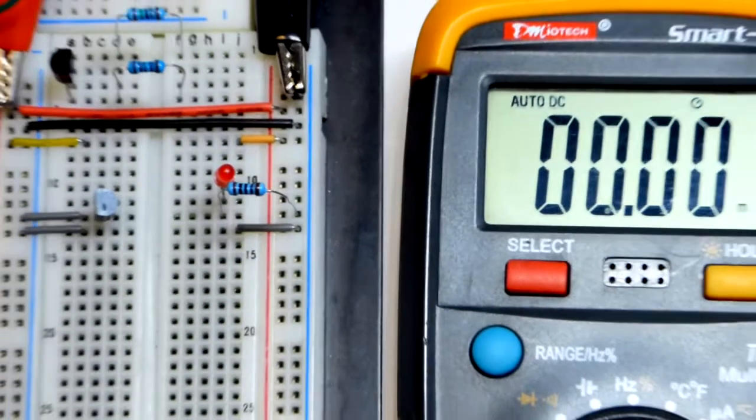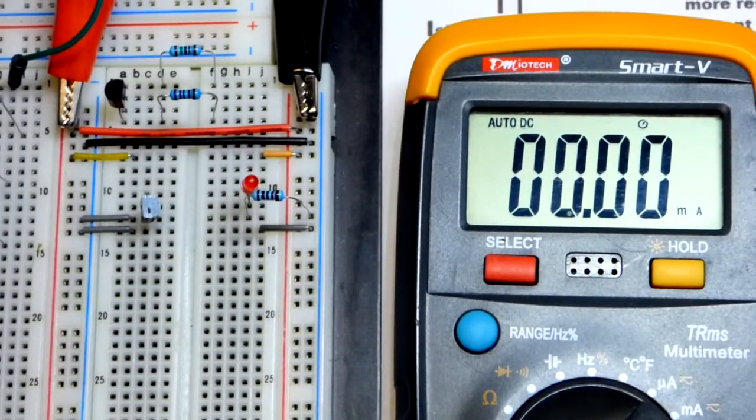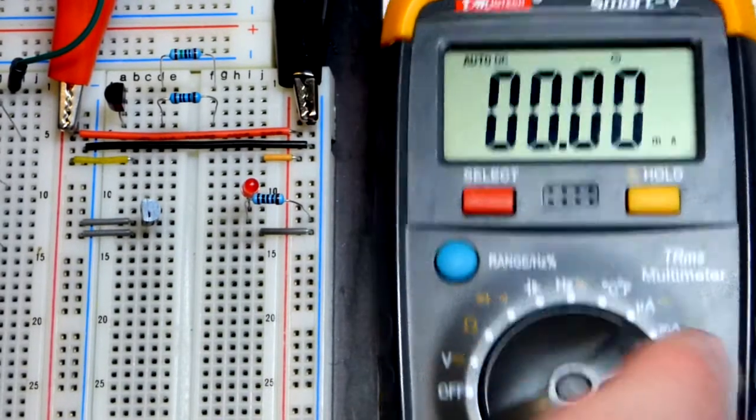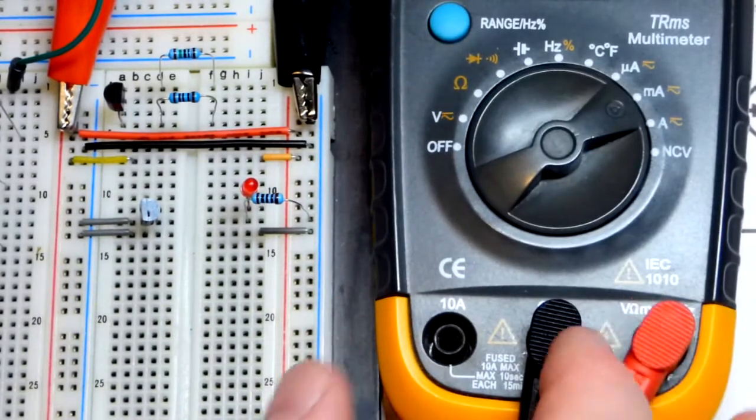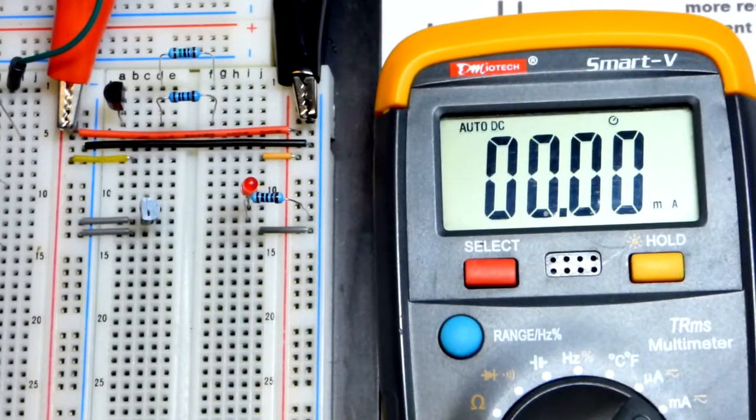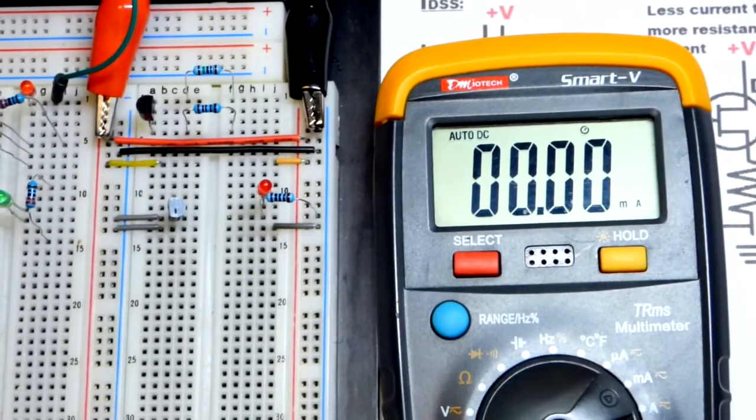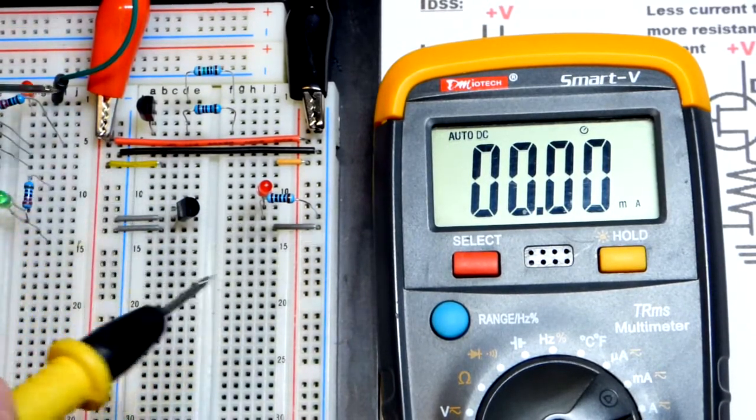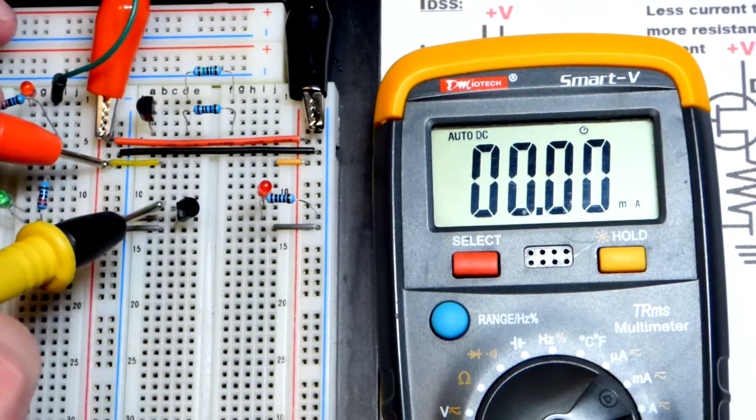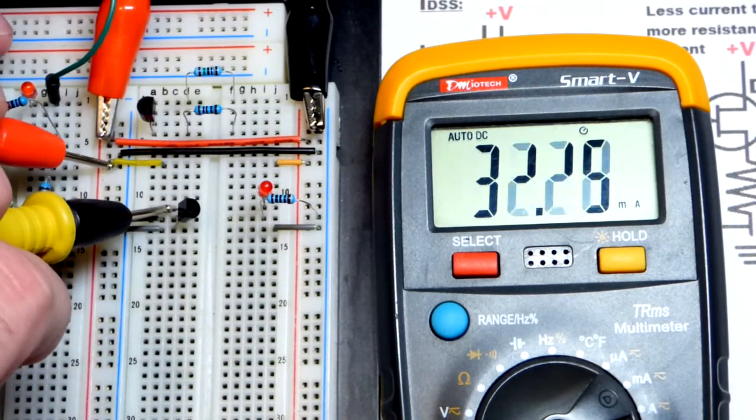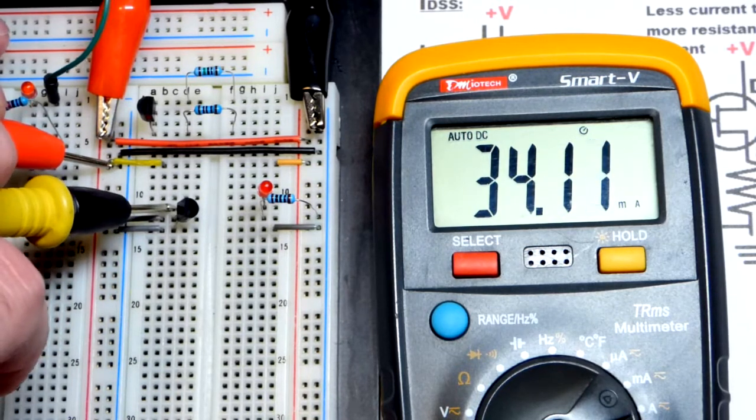So there's other JFETs out there, they'll have a different range of current. So I have it set to milliamps right there. This meter you can just leave the red probe in that spot unless it's high current, but some meters you may have to move it. So what I'm going to do is put the red probe directly to this jumper which goes to the positive rail. I have the power supply set to 5 volts right now by the way. And there we go, we have about 34 milliamps of current.